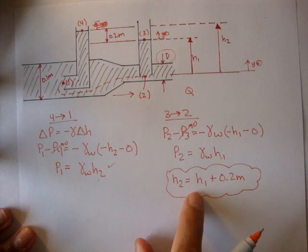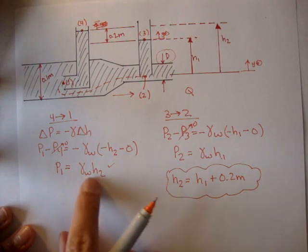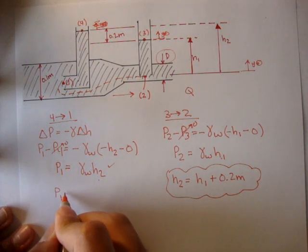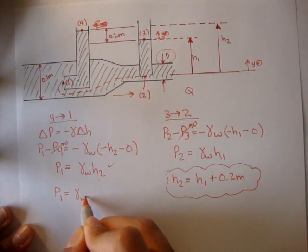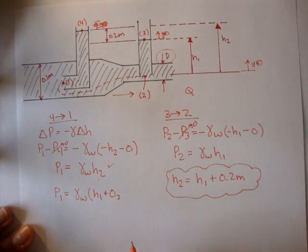And we can maybe substitute this into h2. So we can get rid of at least one of the h's. So we get pressure one is equal to gamma of water times h1 plus 0, not O2.